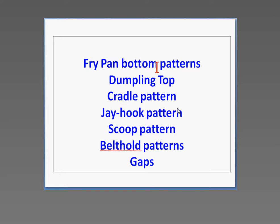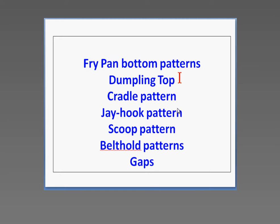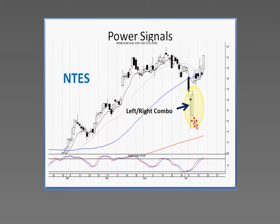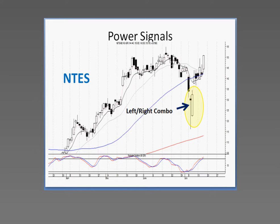We've put those into a formula where you can identify — or it identifies for you — when the strong signals are in effect. Net Tees, for example, had that big long-legged doji hammer followed by a bullish engulfing — your left-right combo. And what did it do after that? Gapped up. That makes for a very strong probability of being in the right trade at the right time, and a strong price move potential moving up from that level.